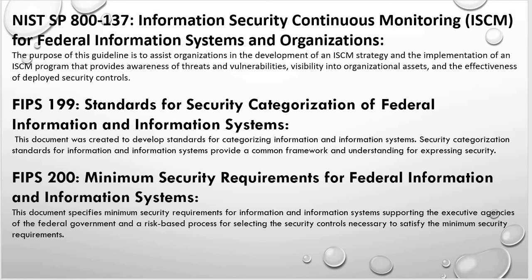FIPS 200 is the Minimum Security Requirement for Federal Information and Information Systems. This publication guides you during the selection of security controls according to the categorized impact value. It is the standard you reference to know the minimum security requirement for a particular information system that has been categorized.